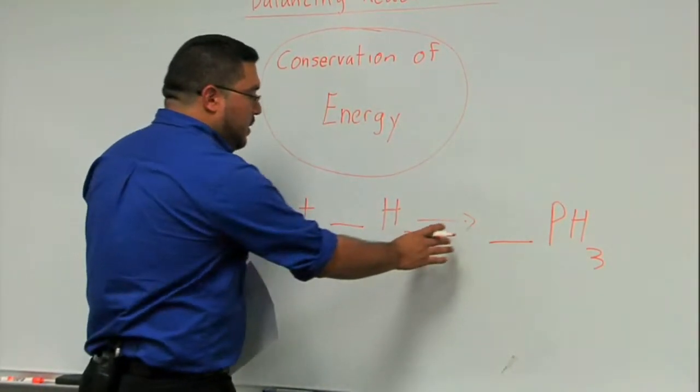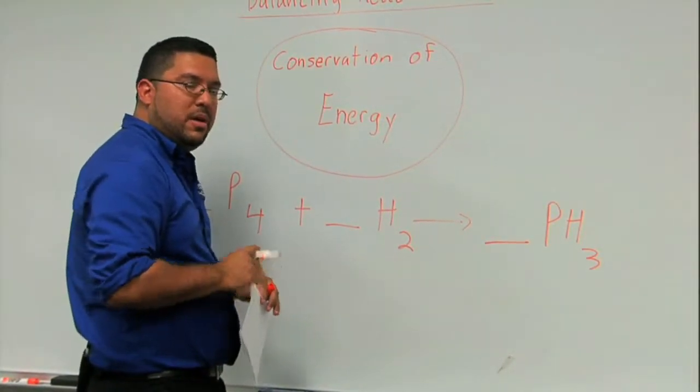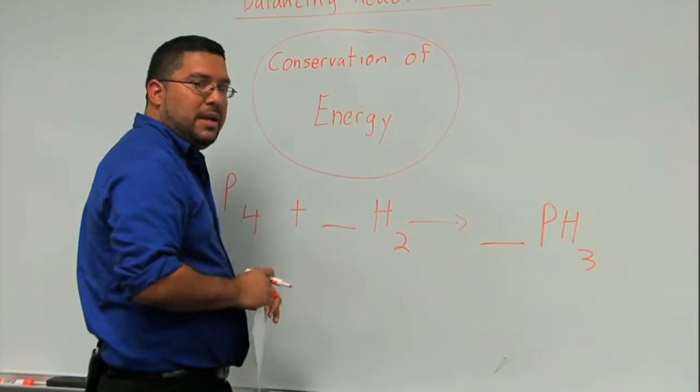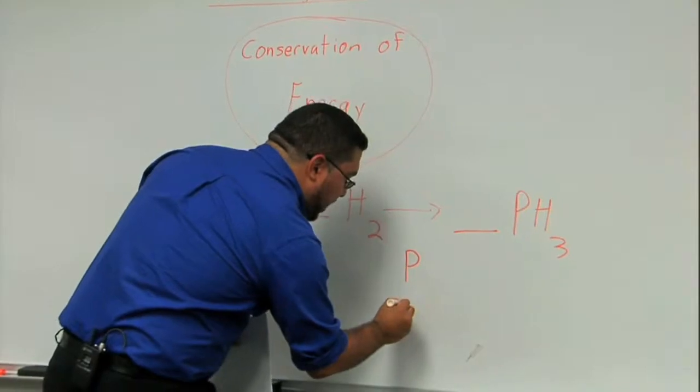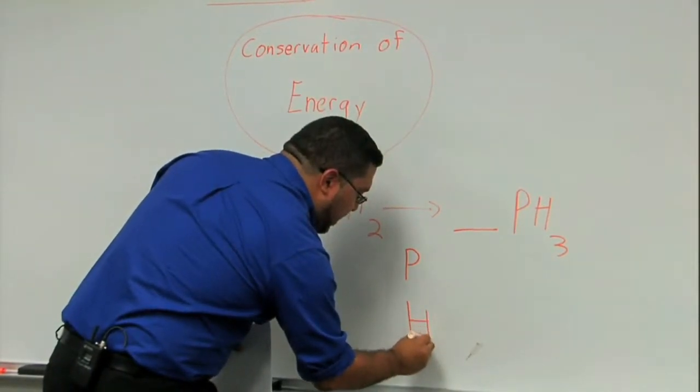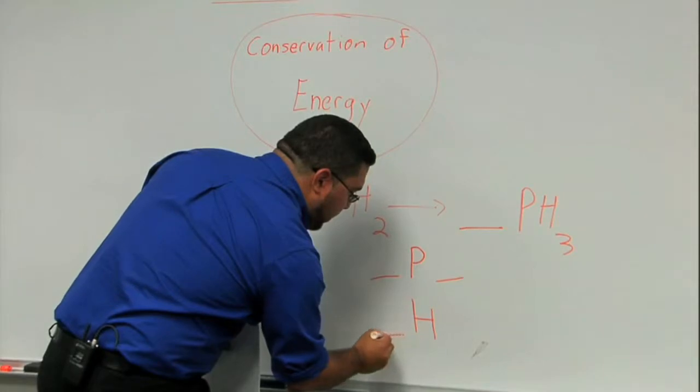So what I would do is ask myself: how many phosphorus do I have on both sides? And then, how many hydrogens do I have on both sides?